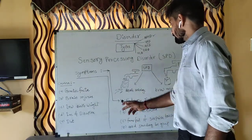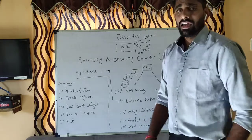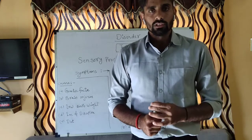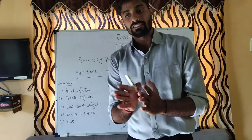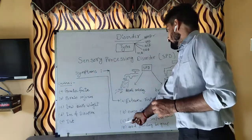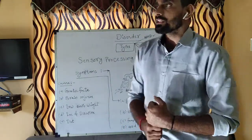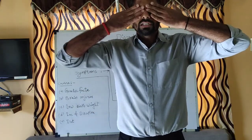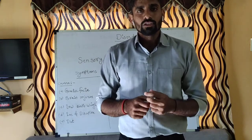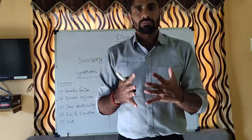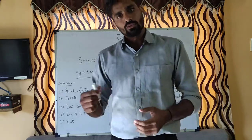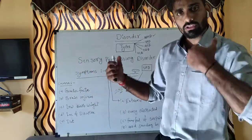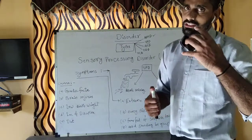The second symptom is being easily distracted. If there is a normal discussion and kids are talking to each other, they get easily distracted. The third symptom is being fearful of surprise touch. Like when we are sitting in a friend circle and a friend comes and surprises us — kids with SPD get very scared. Their senses react at an extreme level, so fear comes easily.